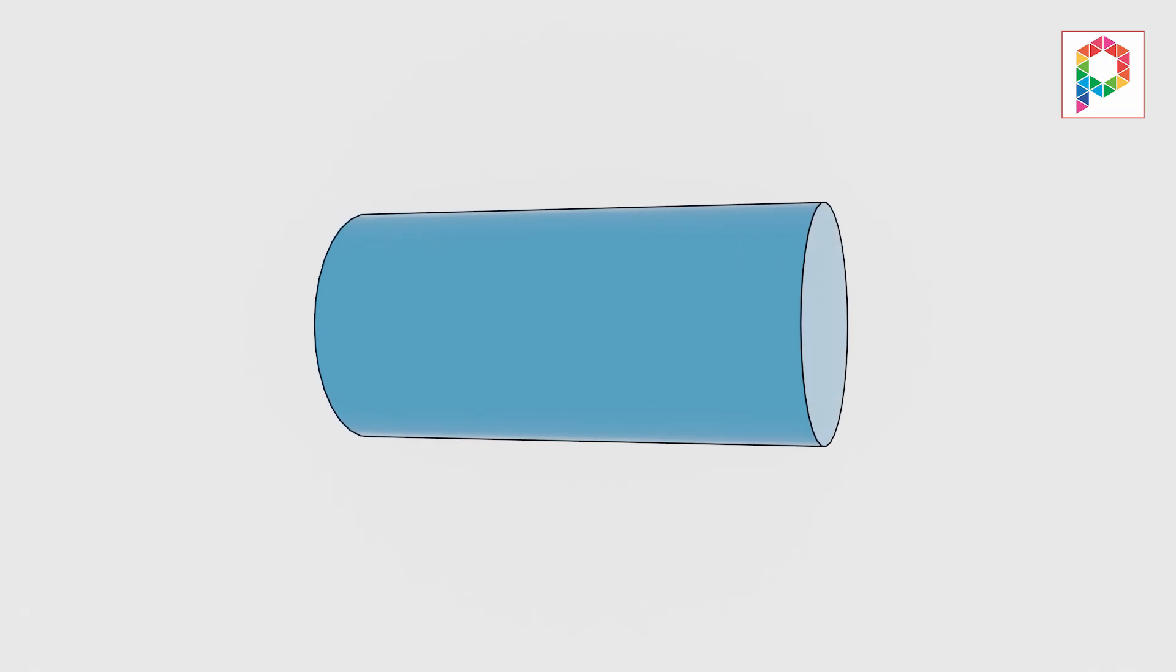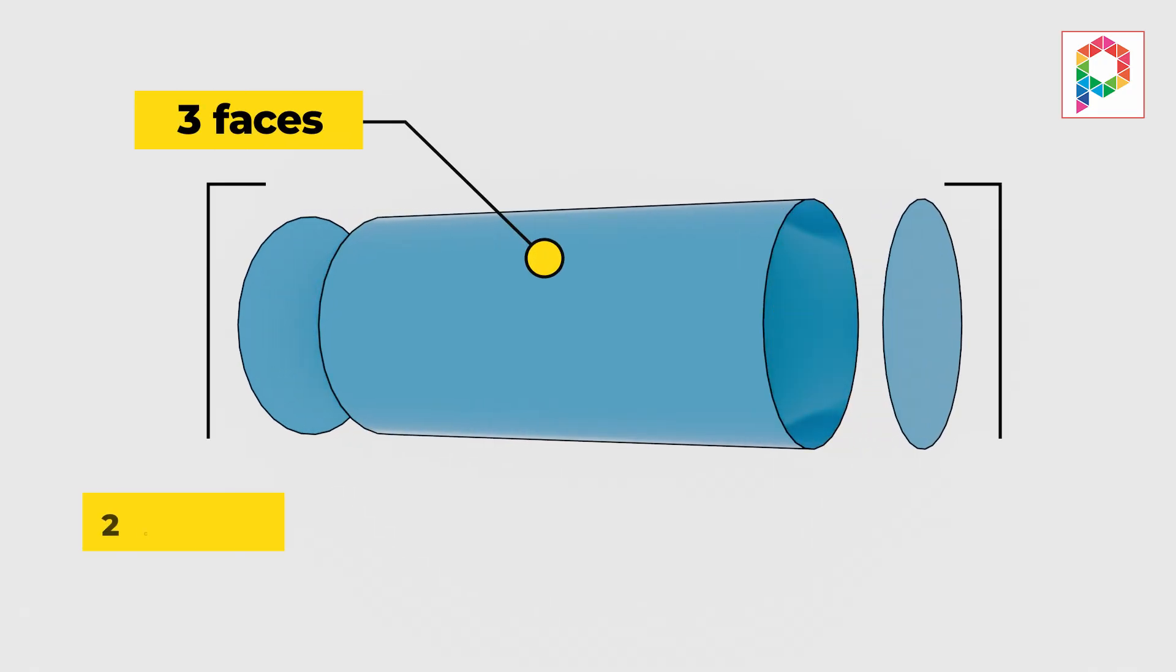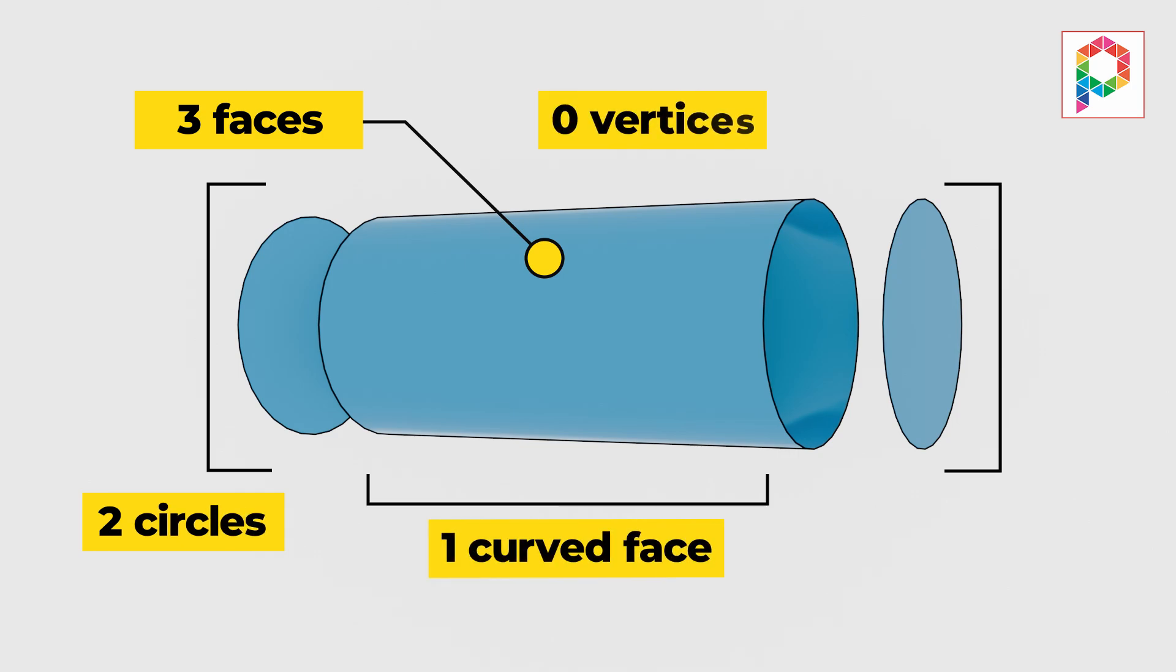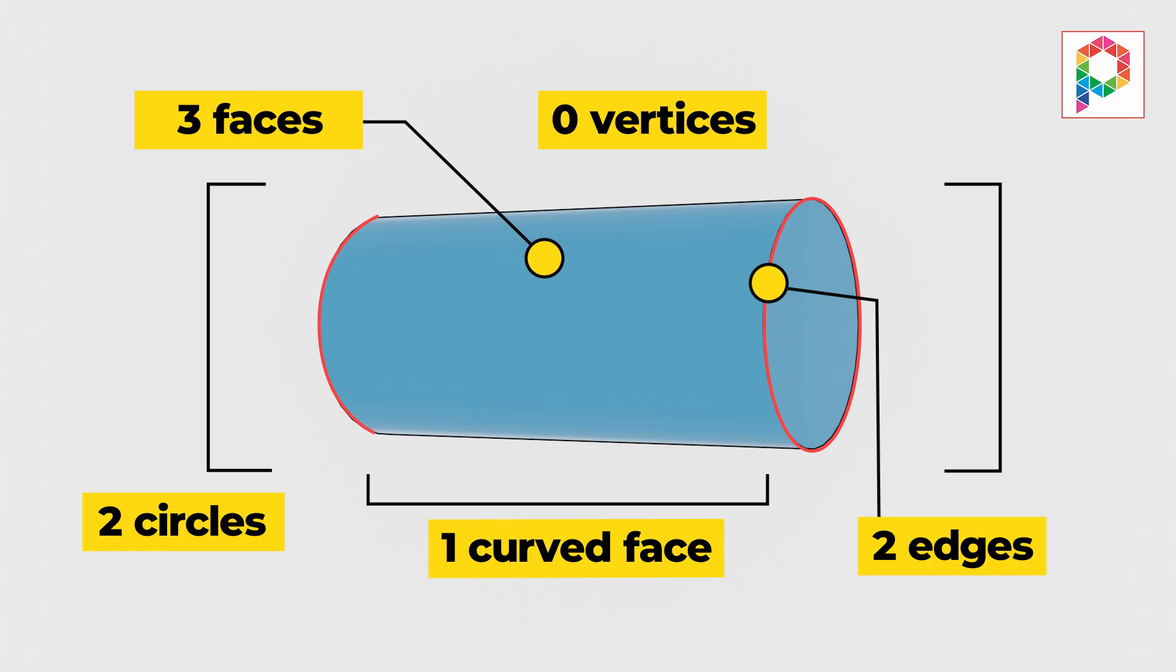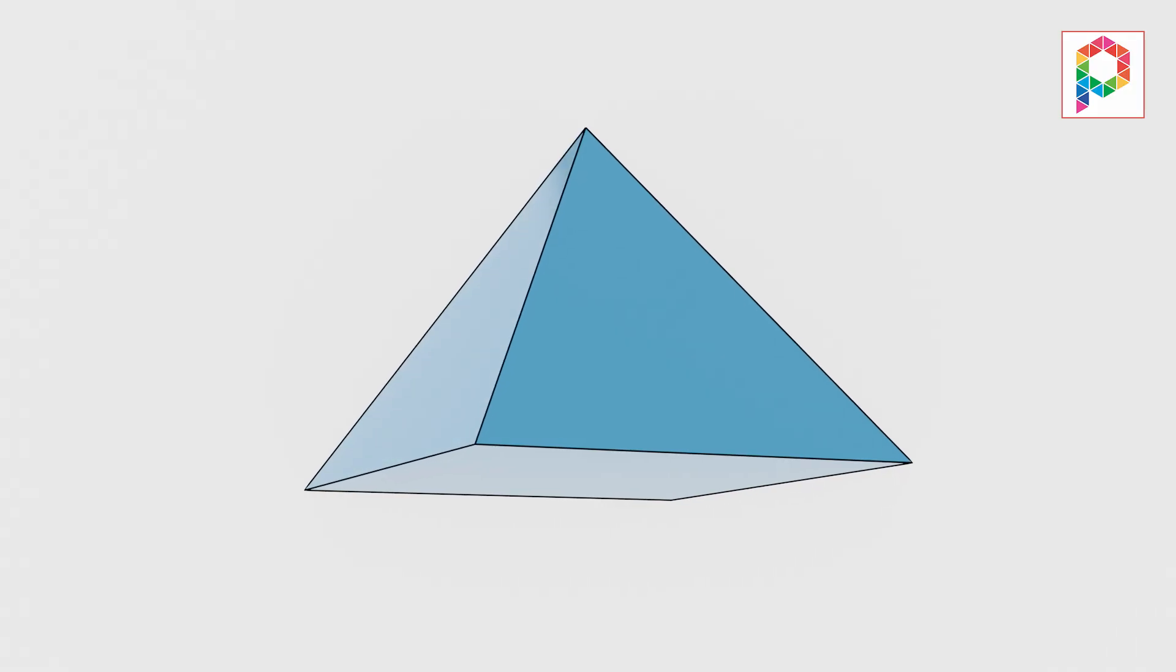A cylinder, like a soda can, has three faces: two circles and one curved face. It has zero vertices and two edges where the circles meet the curved face. That's so different! And pyramids?